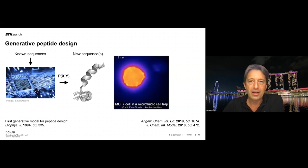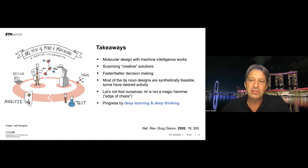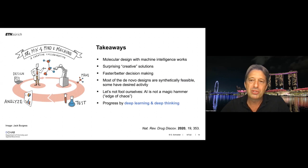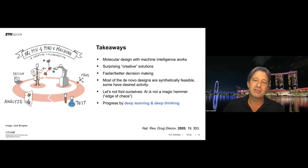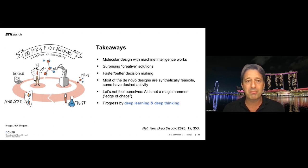I hope you learned today that molecular design with machine intelligence works — it's a matured technology you can use in your own laboratories, it creates surprising solutions, and it helps us make better decisions faster. Many computer-generated designs have the desired activity with a success rate of somewhere between 50 and 80 percent. But AI is not a magic hammer — always be critical and apply deep thinking together with deep learning to make sense of these computer-generated products.